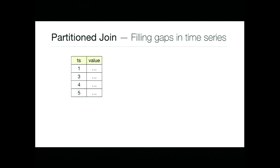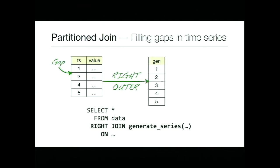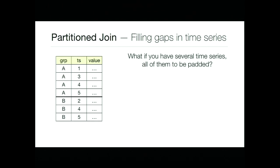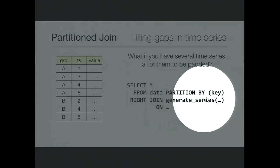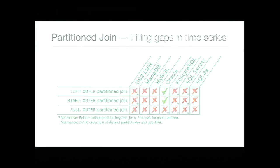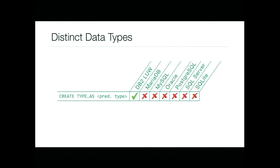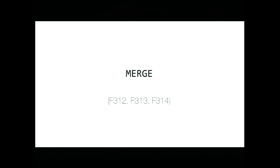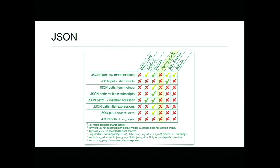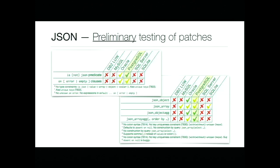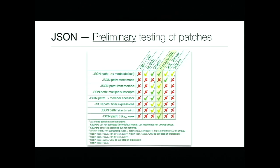Other features briefly: partition join for gap-filling in time series — when you have multiple groups, the SQL standard syntax uses PARTITION BY; only Oracle supports it. LIST AGG is very much like STRING AGG. Distinct data types are core SQL but hardly supported. Two work-in-progress items are MERGE and JSON support — patches are in a condition where there's a good chance they'll be applied at some point. With the JSON patches applied, the conformance picture looks pretty good, though I haven't looked in detail yet.